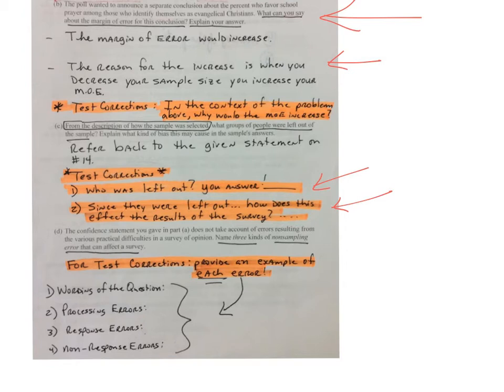On number two, processing errors. What does that mean? I need you to give me an example of how processing errors would be in this scenario. And then in three, a response error. What would be a type of response error that you would encounter?